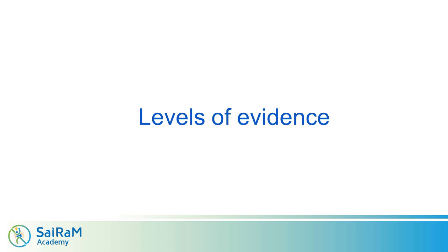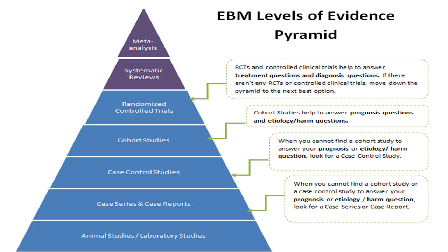We have two things to cover. The first is levels of evidence — how to orderly rack all the information you have got from your search. This is what is called levels of evidence. So this is the evidence pyramid. Whatever information you have collected might have some research methodology adopted for finding the answer to the research question. Based upon the research methodology adopted, we are going to rack the studies in a pyramid. Do not relate the volume of the squares — just see hierarchically which sits on top. Meta-analysis and systematic reviews sit very comfortably right on top of the pyramid.